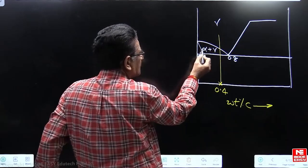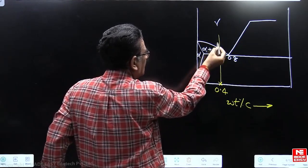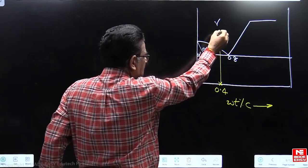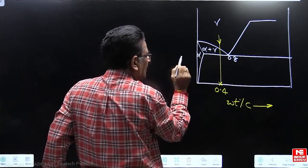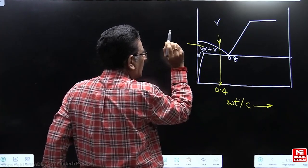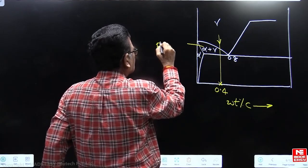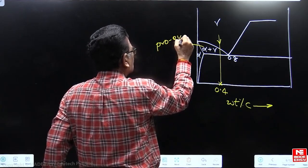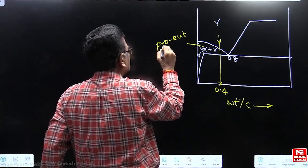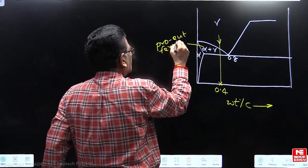Austenite first gets converted into alpha plus gamma during the cooling process I am discussing. Austenite first gets converted into alpha plus gamma and this alpha is what is called as proeutectoid alpha. This is called as proeutectoid ferrite phase.